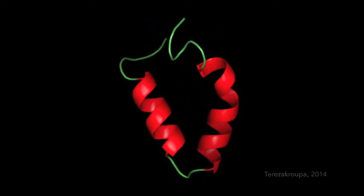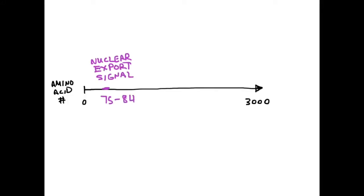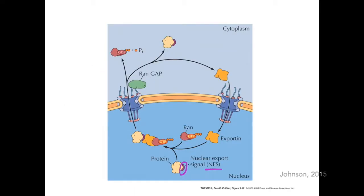The second notable sequence is a nuclear export signal. This particular sequence, in conjunction with helper proteins called exportins, allow Huntington to travel across the nuclear envelope.